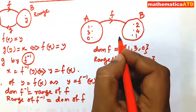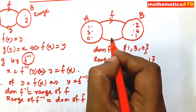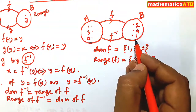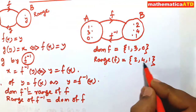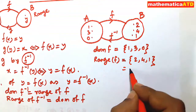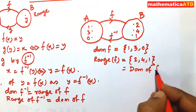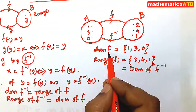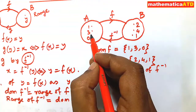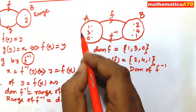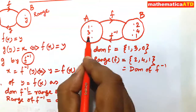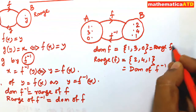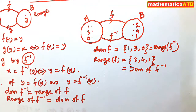If there is an inverse function from B to A, if it exists, then the domain of f inverse is {2, 4, 1} — which is the range of f. So {2, 4, 1} is actually the domain of f inverse. And {1, 3, 0}, which is the domain of f, is the range of f inverse.